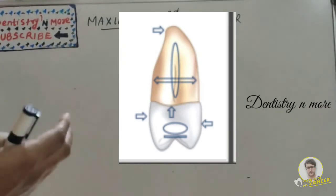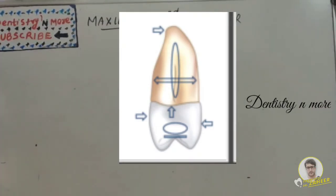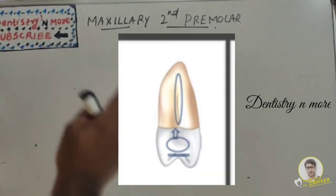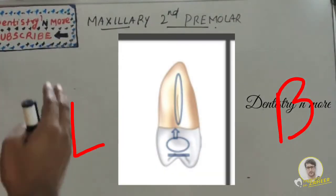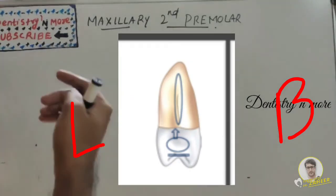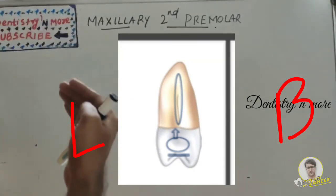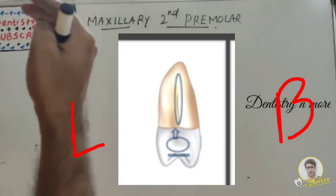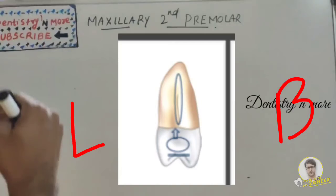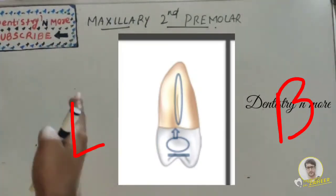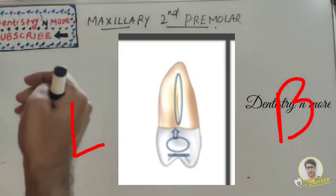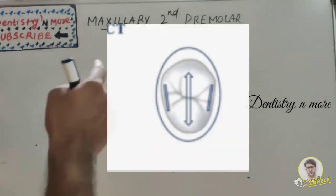On the distal aspect, it is almost similar to the mesial aspect. The distal contact area is wider and more cervical, and the distal marginal ridge is more cervical. A straighter cervical line is present compared to the mesial one, and there is a deeper developmental depression.